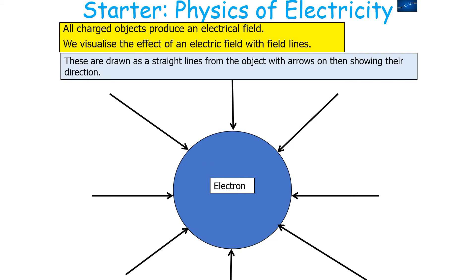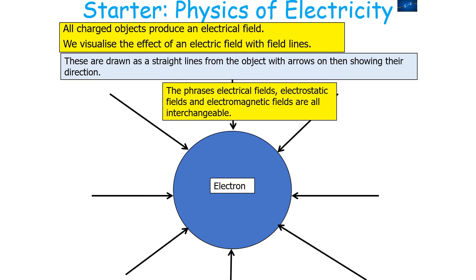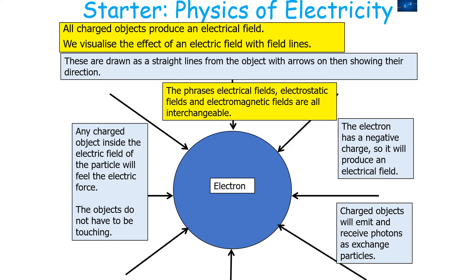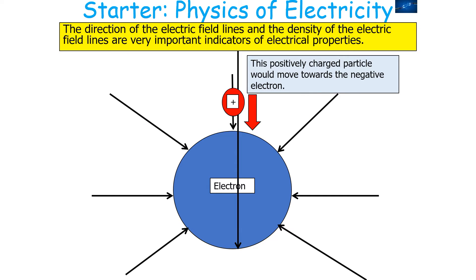We can visualise the effect of an electrical field with field lines, drawn as straight lines from objects with arrows showing their direction. The phrases electrical fields, electrostatic fields, and electromagnetic fields are all interchangeable in this context. Any charged object inside the electrical field of a particular particle will feel the electrical force — the objects do not need to be touching. The electron has a negative charge, so it will produce an electrical field, and these charged objects will emit and receive photons as exchange particles to mediate the force. The direction and density of the electrical field lines are very important indicators of electrical properties.